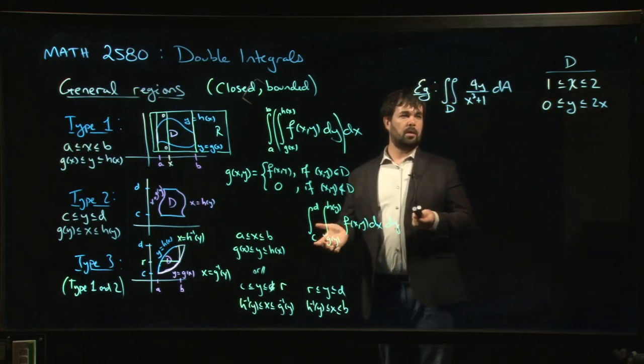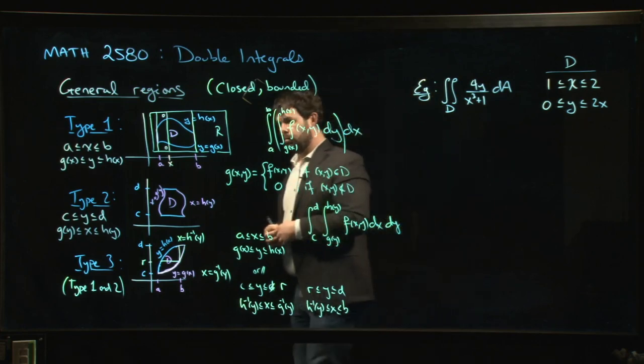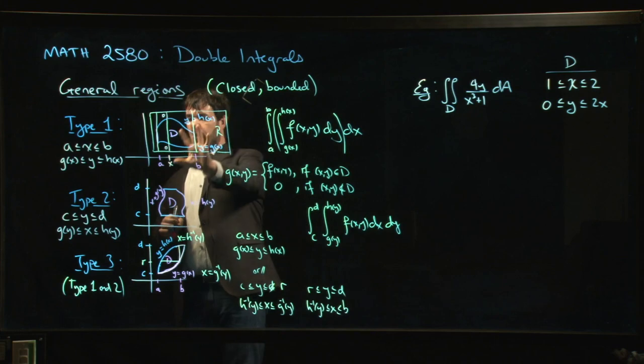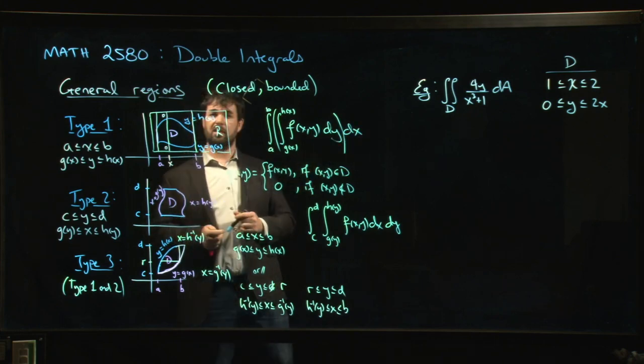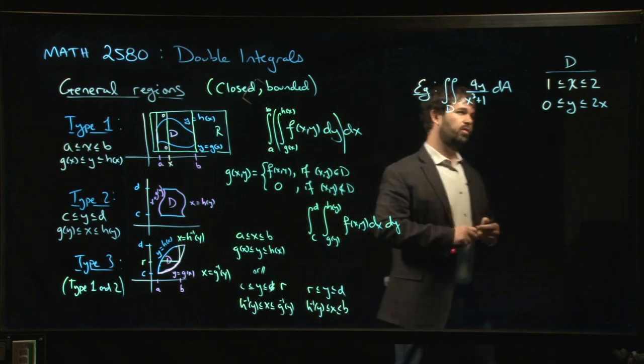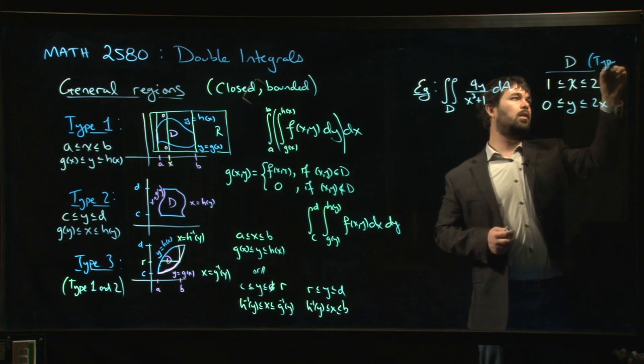Alright, so here's an example of a double integral that we might try to evaluate over a general region. Looking at our types of regions here and the way this region is described, we can see that what we're dealing with is a Type 1 region.